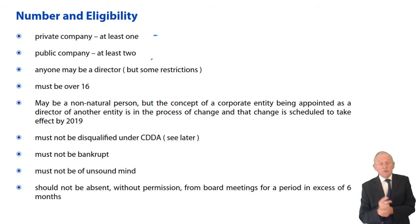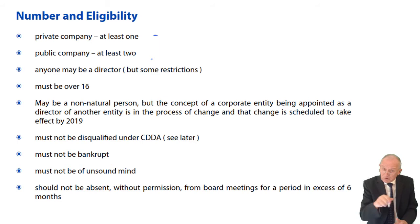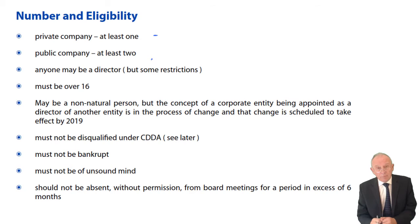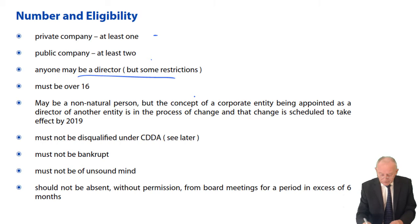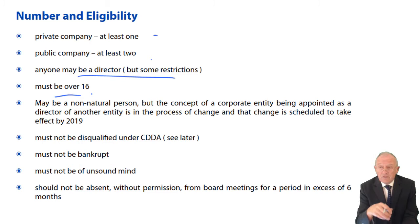Number and eligibility of directors: private companies need at least one; public companies must have at least two. Interestingly, the minimum number of members for a public company is only one, but they have to have two directors. Anyone may be a director, but there are some restrictions. For instance, if you're under 16, you can't be a director. There was a case where an under-16 was appointed as a director, but he was not allowed to operate or take actions as though he were a director — so even by default becoming a director, he was not able to undertake directorial powers.